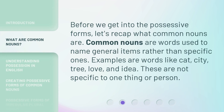Before we get into the possessive forms, let's recap what common nouns are. Common nouns are words used to name general items rather than specific ones. Examples are words like cat, city, tree, love, and idea. These are not specific to one thing or person.